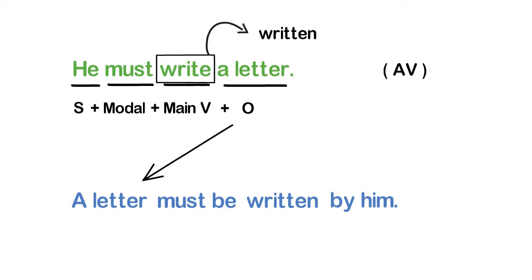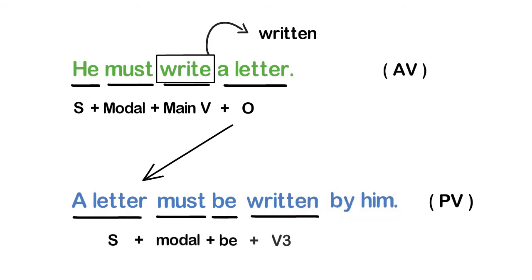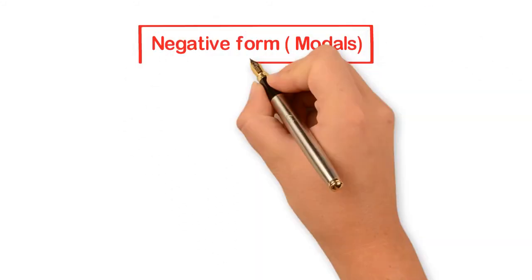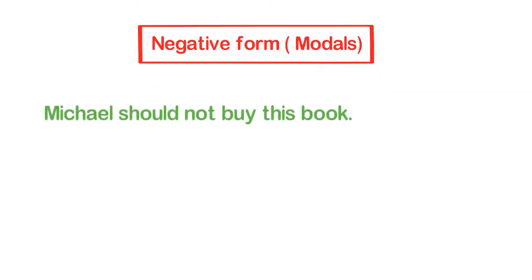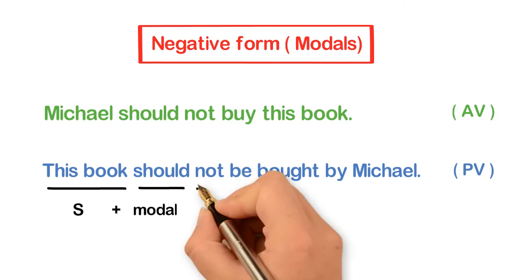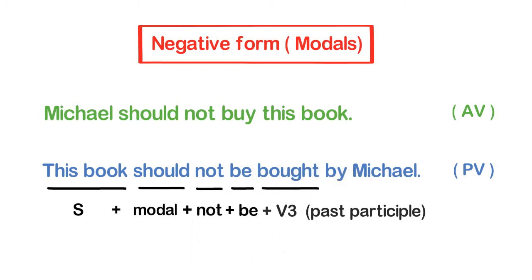'A letter must be written by him.' Structure: subject + modal + be + past participle. For changing a negative sentence with a modal verb — for example, 'Michael should not buy this book' — converting to passive voice, it becomes: 'This book should not be bought by Michael.' Structure: subject + modal + not + be + past participle.